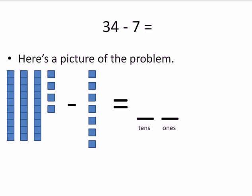3 10s, that's 30, 10, 20, 30, and then 4 1s. There's 34. Minus 7. There's no 10s, so just 7 1s.